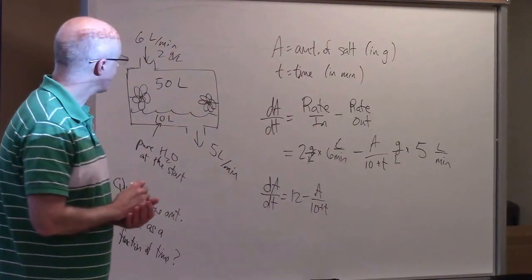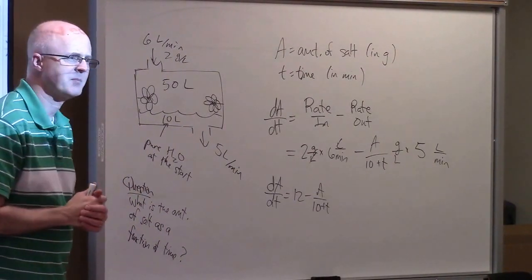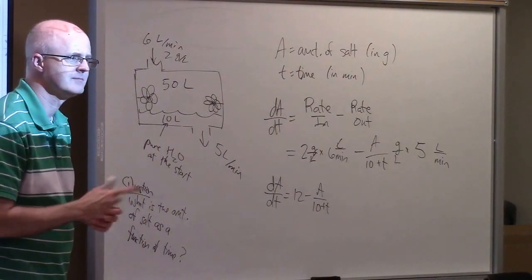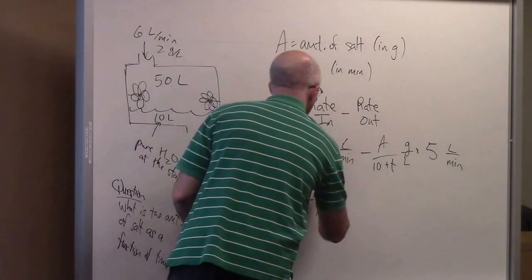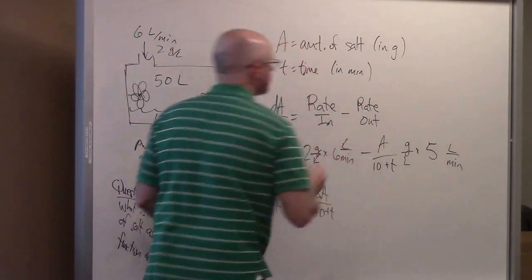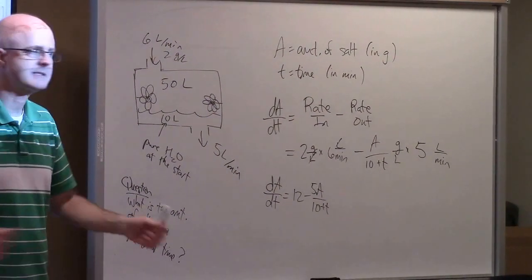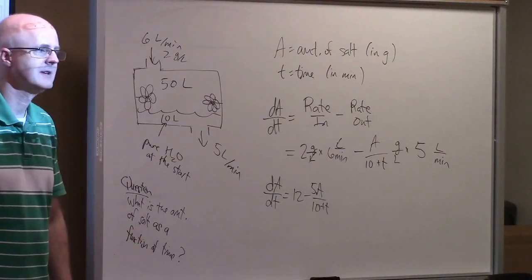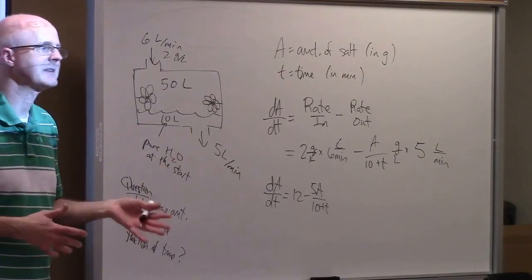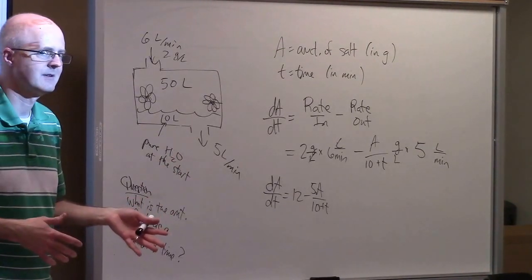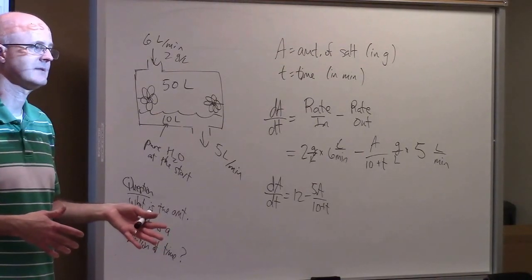The differential equation is dA/dT = 12 − 5A/(10 + T). This equation is actually not separable — no amount of manipulation will get all the A's on one side and all the T's on the other.